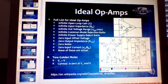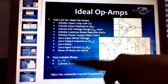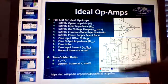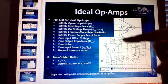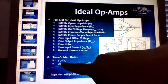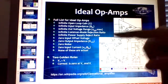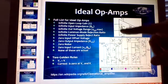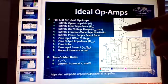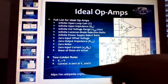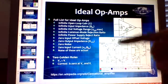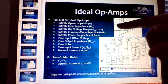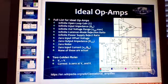The two golden rules of an op amp: V+ and V- at the inputs are equal because there's no current flowing into the inputs, and since there's no current at the inputs, that's how we solve the problems.